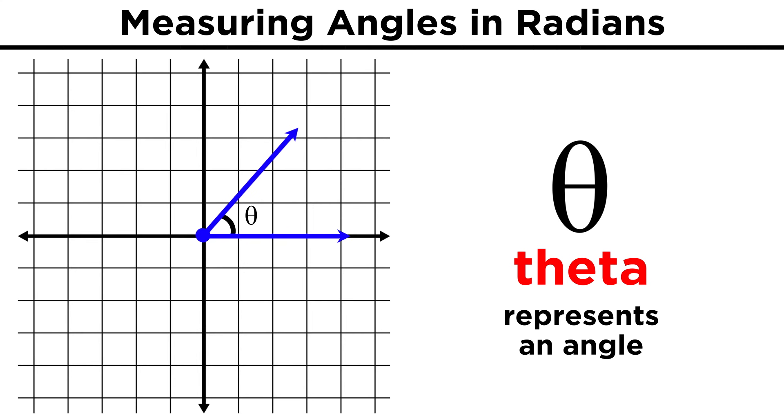To describe this angle, we often use the coordinate plane. We place one of the rays on the origin, extending along the X axis in the positive direction. The location of the other ray will determine the magnitude of this angle, represented by the Greek letter theta.